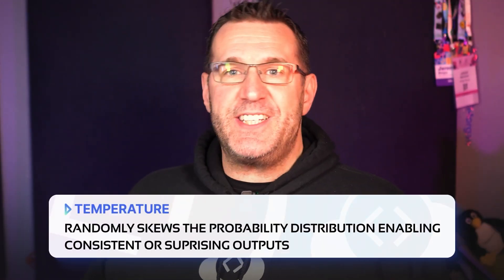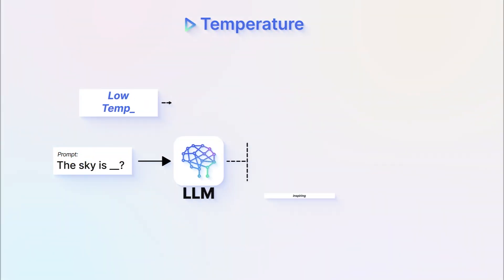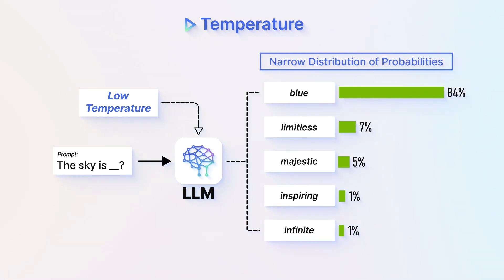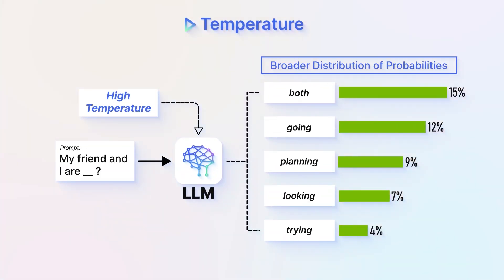Temperature randomly skews the probability distribution, enabling consistent or surprising outputs. Low temperature makes conservative predictions focused on the few token choices with the highest individual probability, and this produces consistent and usually more factual responses focused on those key prompt details. High temperature smooths out that distribution, allowing more randomness and creativity — and sometimes a higher temperature will produce more output and more results. Temperature should be tuned based on your application needs: do you need it to be really consistent and predictable, or do you need creativity and surprises? Adjust the setting until you get the results you're looking for.